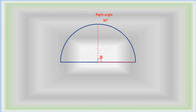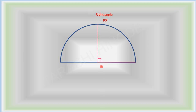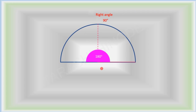This is a right angle. We know its angle measure is 90 degrees. If the angle measure is less than 90 degrees, it is an acute angle, and if it is greater than 90 degrees, it is an obtuse angle. Now what about this angle? It is a straight angle, and its angle measure is 180 degrees.